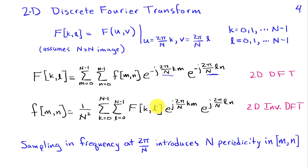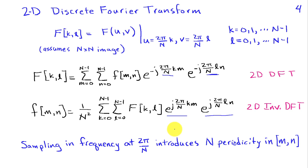The inverse 2D DFT represents the image as weighted combinations of sinusoids in both the m and n directions. As in the one-dimensional DFT, when we sample in frequency at N points, we get N periodicity. This has important consequences when using the 2D DFT to compute convolution.